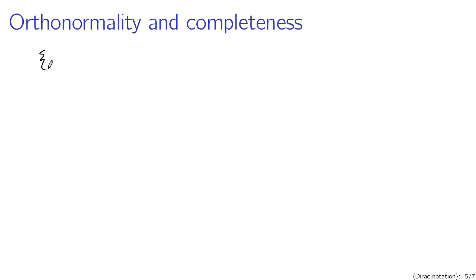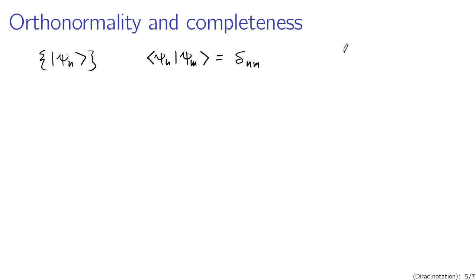Another idea we can express concisely in Dirac notation is orthonormality and completeness. If I have some basis, say from solving the time-independent Schrodinger equation for a particle in a box or quantum harmonic oscillator, orthonormality is easy to express: the inner product of psi n and psi m is a Kronecker delta. If I have a continuous set of basis functions, the inner product of psi p1 and psi p2 — with continuously variable parameters — is not a Kronecker delta but a Dirac delta function, say p1 minus p2.